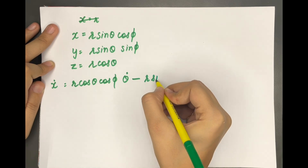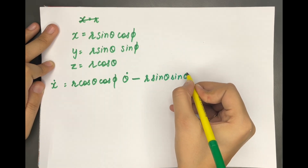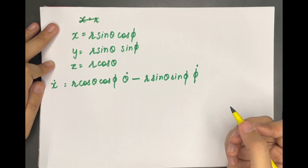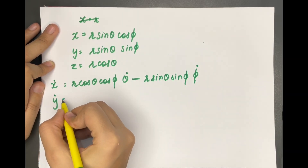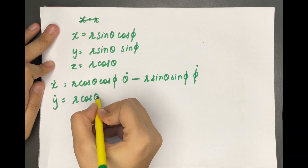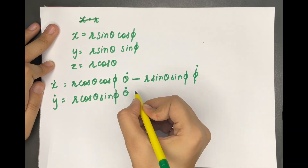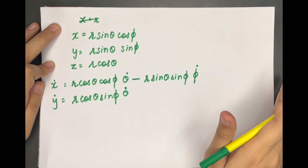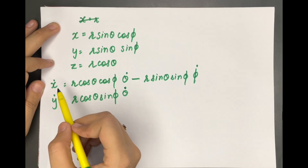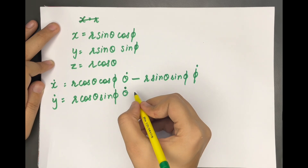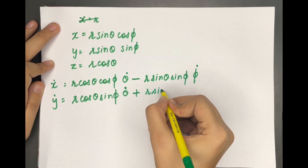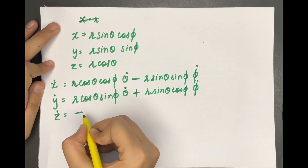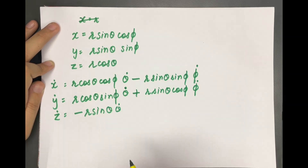Continuing with the product rule: ẋ = r cosθ cosφ θ̇ − r sinθ sinφ φ̇. You can pause the video and check. Now ẏ = r cosθ sinφ θ̇ + r sinθ cosφ φ̇. And ż = −r sinθ θ̇. We have simply applied the product rule of differentiation throughout.